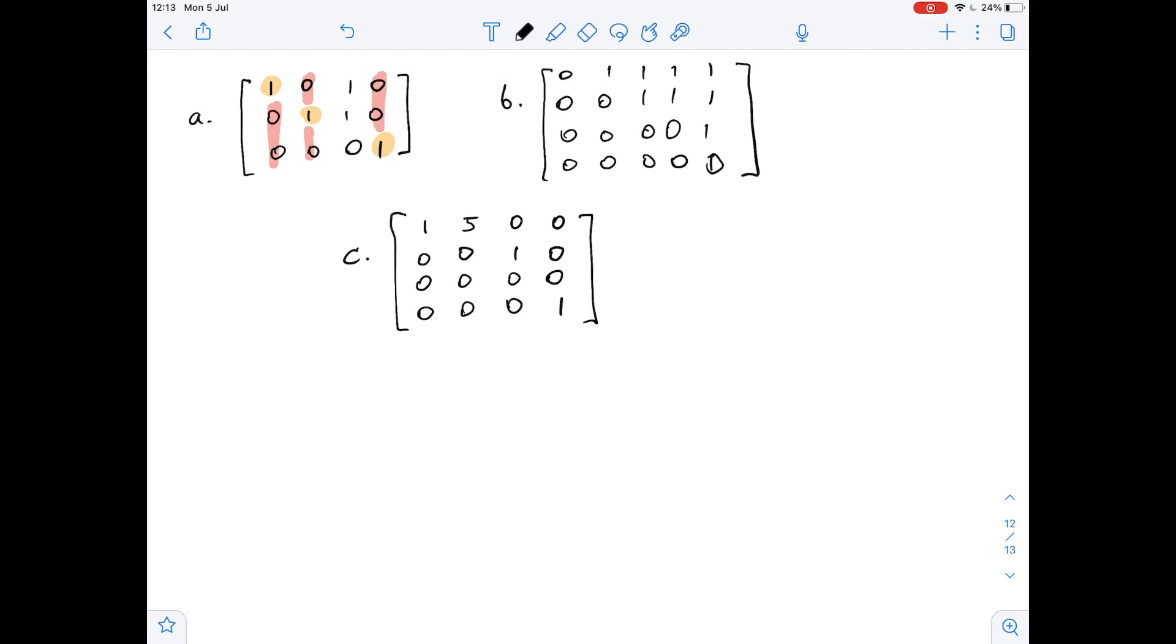So that means that matrix A is in reduced row echelon form. So it's a reduced row echelon form.